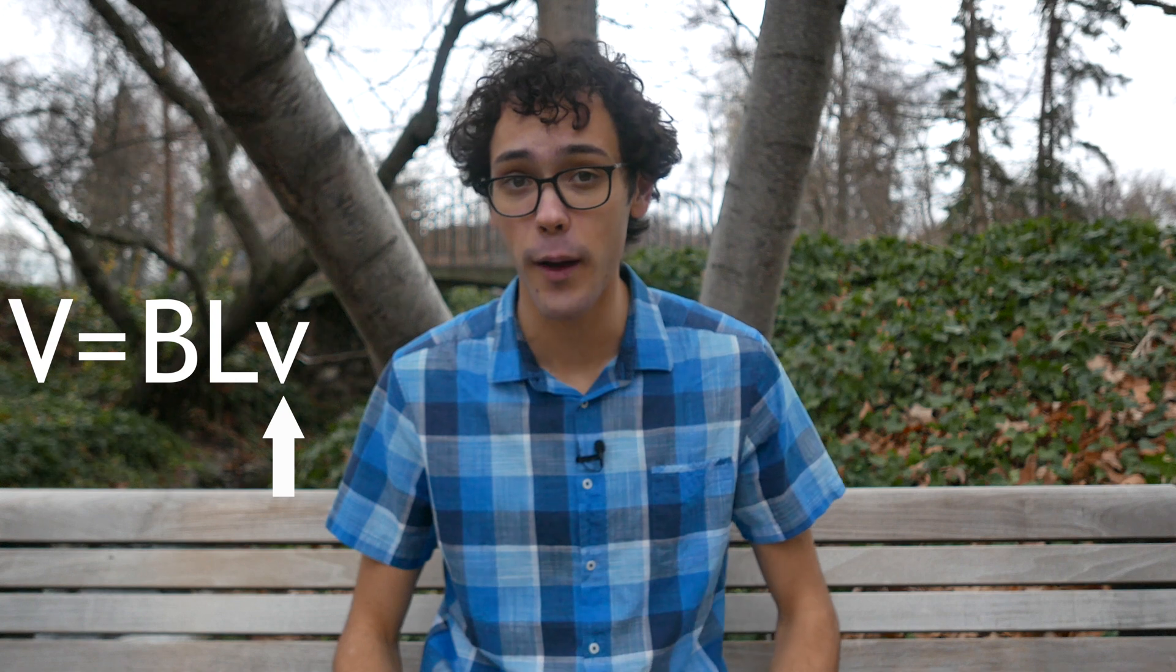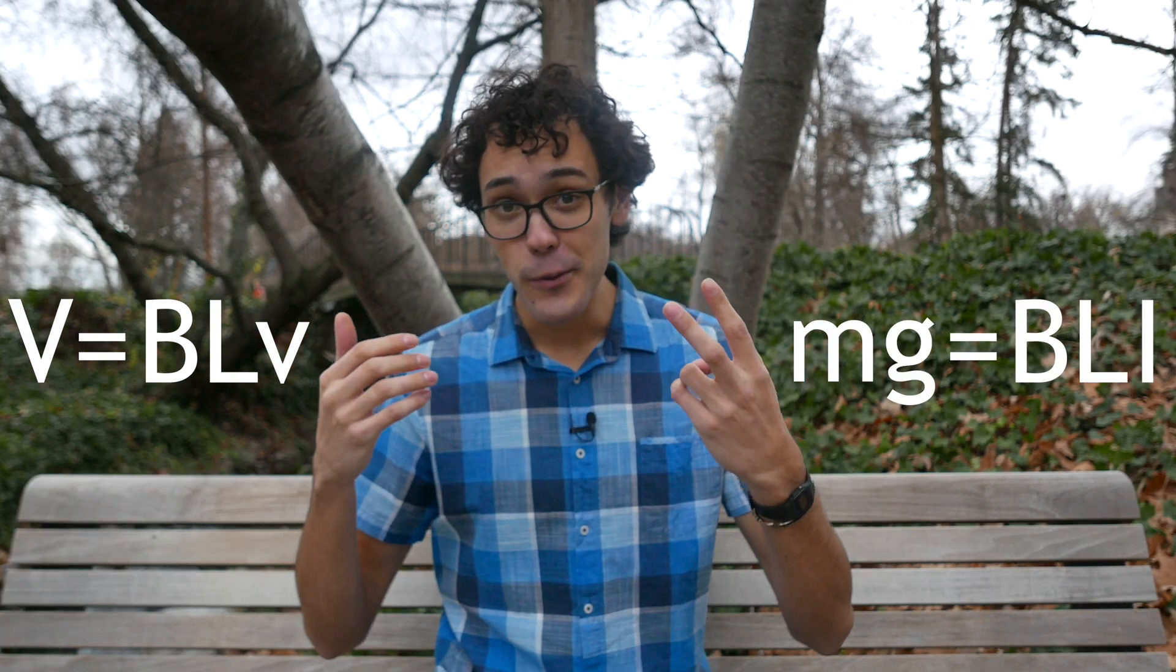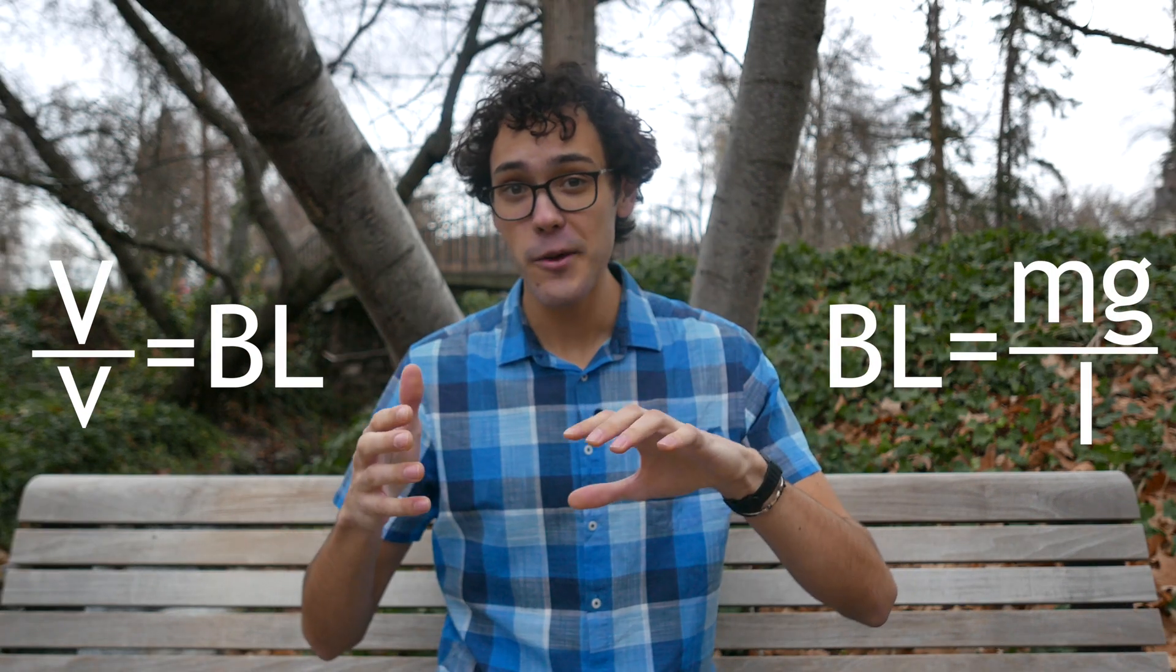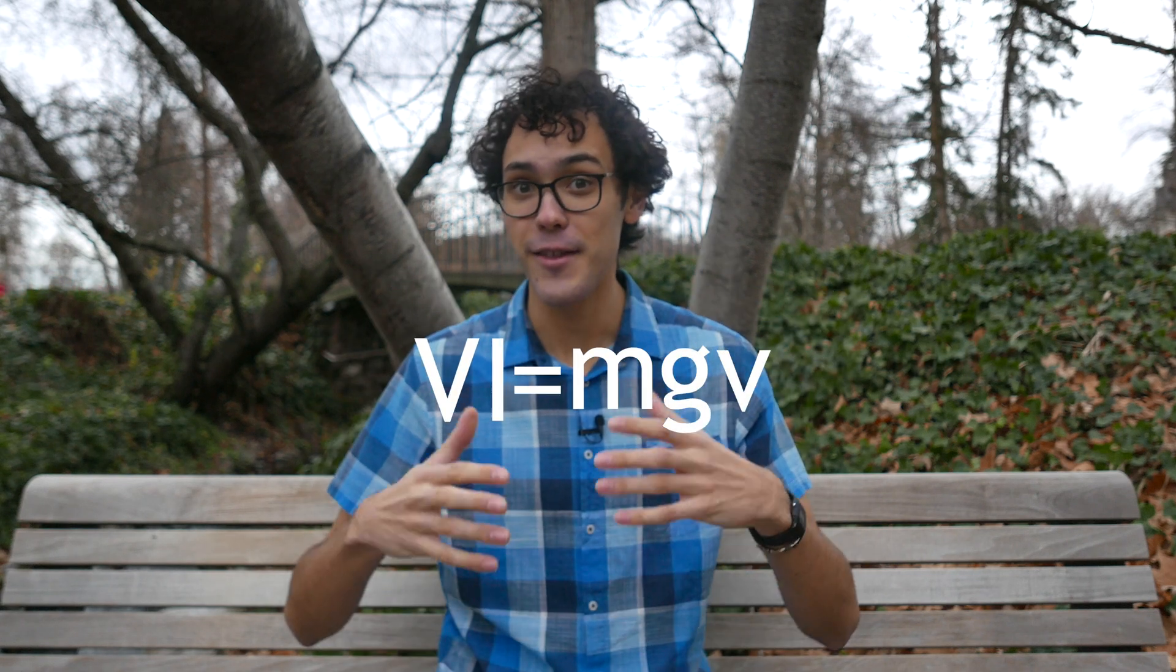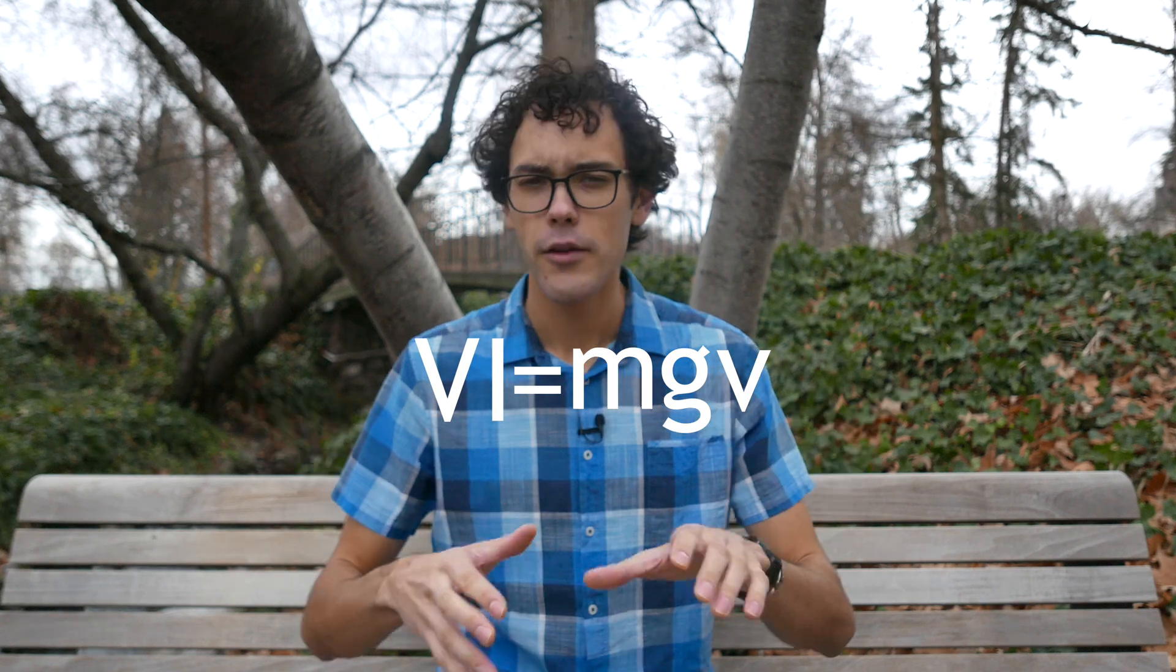The equation for this works out to be V equals BLv, where little v is the velocity of the coil through the field. Now we have two equations. So after rearranging, we can set them equal to each other and eliminate B and L without ever having to know them exactly. Which is great.